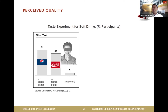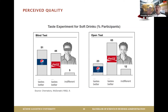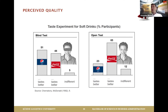In an experiment, you change one thing and repeat. Here, the researchers changed it to an open test — participants could now see what they were drinking. The result: in the blind test it was 50/50, but in the open test a significant 65% of participants said Coca-Cola tasted better. It's about perceived quality, not objective quality — because of associations, you somehow prefer a certain brand.